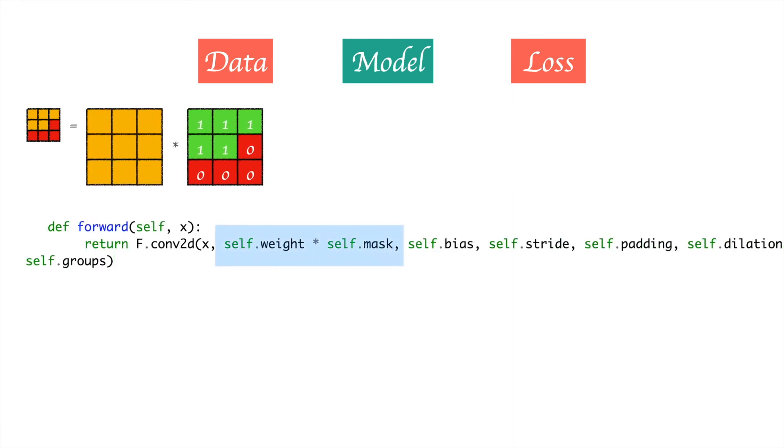Then we multiply the weight of the kernel with the mask to make sure that no matter what the kernel is, it never sees values after i. This ensures that the autoregressive property is maintained.